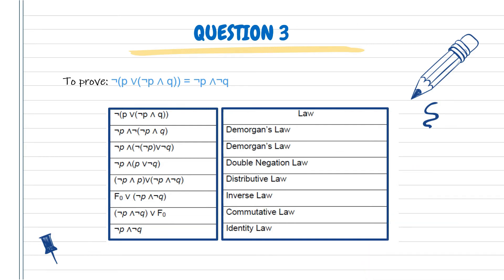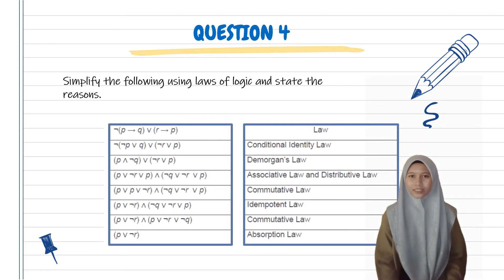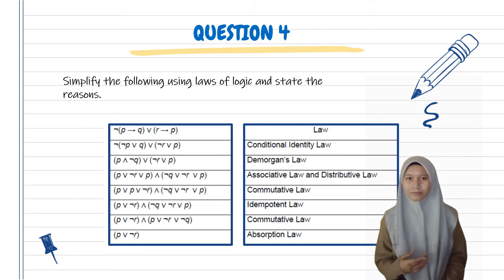Example four: simplify the following using laws of logic and state the reasons. NOT((P implies Q) OR (R implies B)). How to solve this question? First, you can apply Conditional Identity Law at P implies Q and R implies B, so it will become NOT((NOT P OR Q) AND (NOT R OR P)). Next, apply De Morgan's Law at NOT((NOT P OR Q)). It will be P AND NOT Q. And then you can apply two laws here, Associative Law and Distributive Law. It will become ((P OR NOT R OR P)) AND ((NOT Q OR NOT R OR P)).